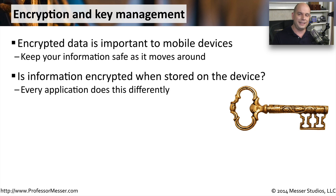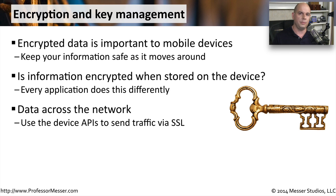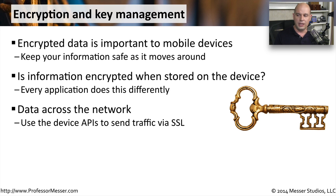Of course, we're going to be sending that data across a network — it's going to be a wireless network, a Bluetooth network, the mobile provider's network. So there are encryption and security APIs. These are application programming interfaces that send this data across the network via SSL, which is obviously a very popular and ubiquitous encryption technology.